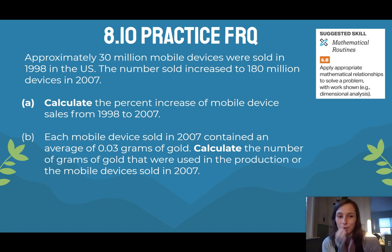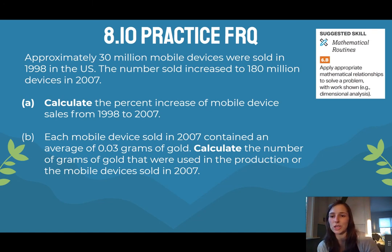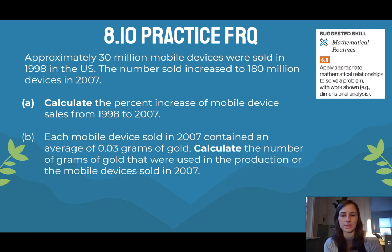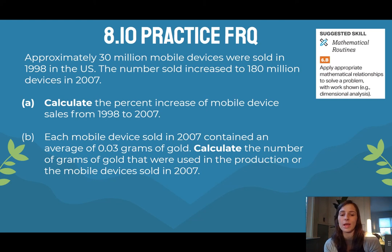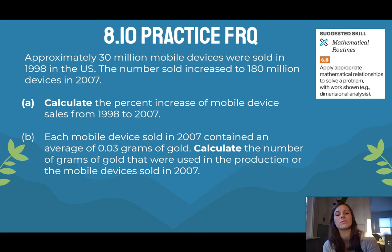This is your 8.10 practice FRQ, practicing math skills. Approximately 30 million mobile devices were sold in 1998 in the US, increasing to 180 million devices in 2007. First, calculate the percent increase of mobile device sales from 1998 to 2007. Second, given that each mobile device sold in 2007 contained an average of 0.03 grams of gold, calculate the total grams of gold used in the production of those 2007 devices.